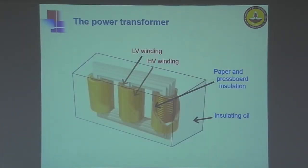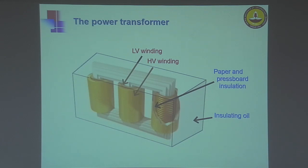Let us move into the structure of a power transformer. Here I have a three-phase transformer which has three sets of primary low-voltage windings and secondary high-voltage windings wound around a core. Each of these windings consists of multiple layers of conductors which are paper-insulated, and the windings are insulated with a press-board layer in between. In an oil-filled transformer, the entire structure is immersed in insulating oil, which also serves the dual purpose of acting as a coolant.